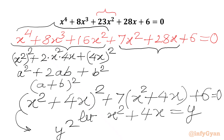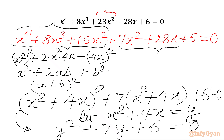We will write y squared plus 7y plus 6 equal to 0. Now it is easy to solve quadratics in comparison with quartic equations. Let us solve this quadratic first, where y is x squared plus 4x.